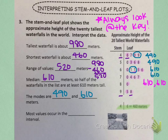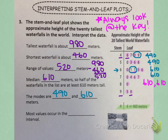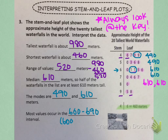When we want to see where most values occur, we look at which stem has the most leaves. This stem right here has more leaves than any other one. So most values occur in the 600 to 690 interval — meaning most of the tallest waterfalls in the world occur in the 600 to 700 meter range.